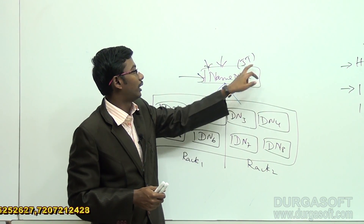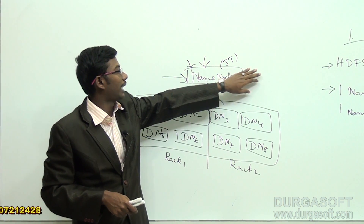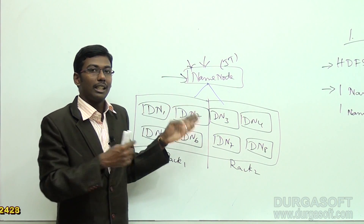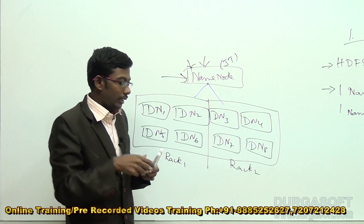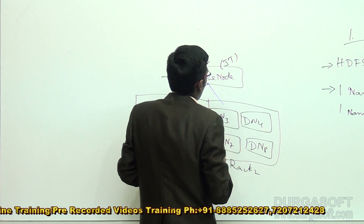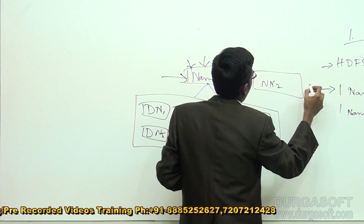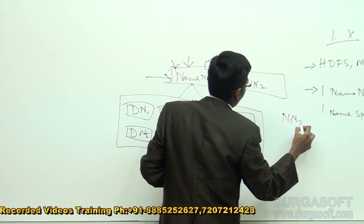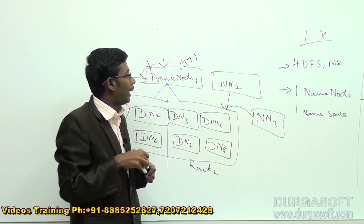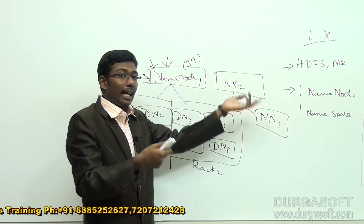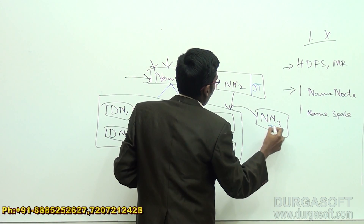That is the major issue with job tracker burden. When dealing with a single name node, suppose the active name node goes down, we have issues with storing and accessing metadata. For that purpose, in 2.x they added the multiple name nodes concept - we can also maintain one more name node as well. By adding multiple name nodes, we obviously may add job trackers also.